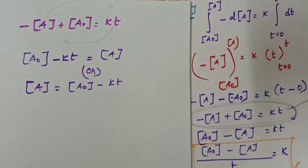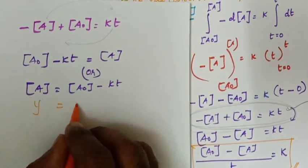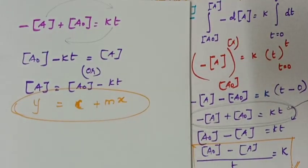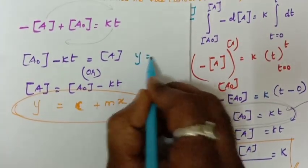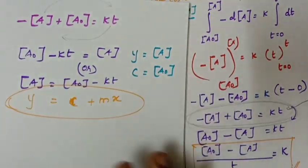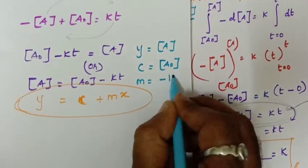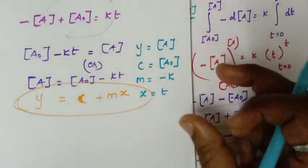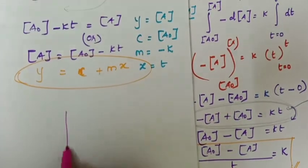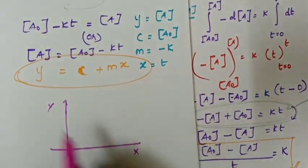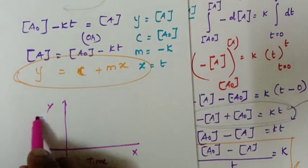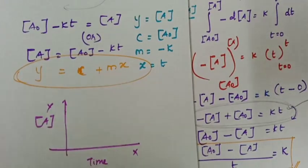This equation matches the straight line format y equals c plus mx. Here, y corresponds to concentration of A, the intercept c corresponds to the initial concentration A₀, the slope m corresponds to minus k, and x corresponds to time t. So if we plot concentration of A versus time, we get a straight line.